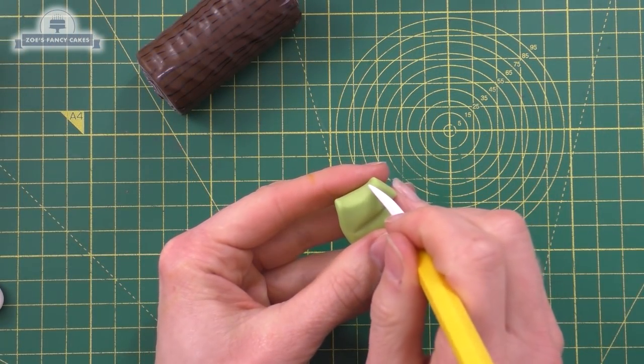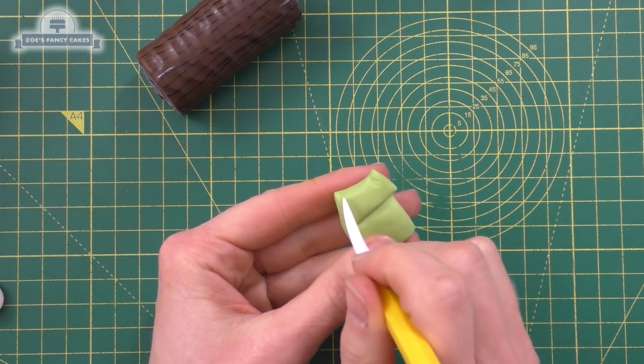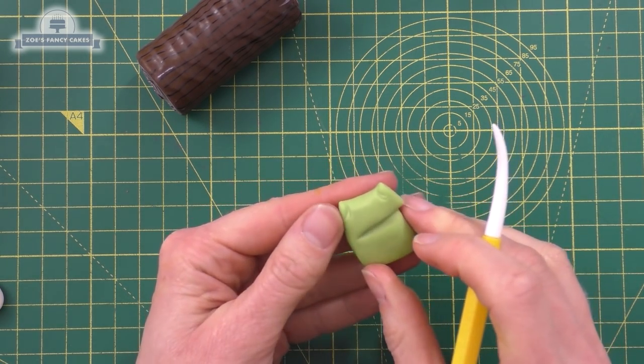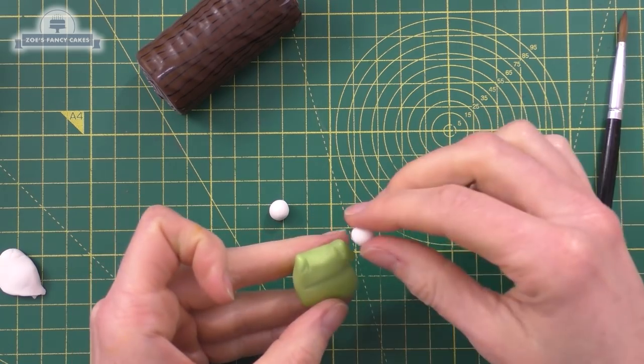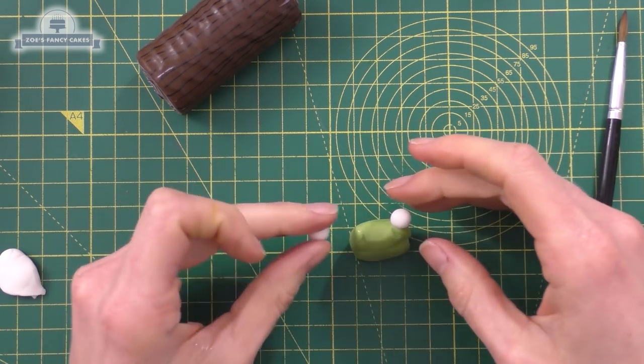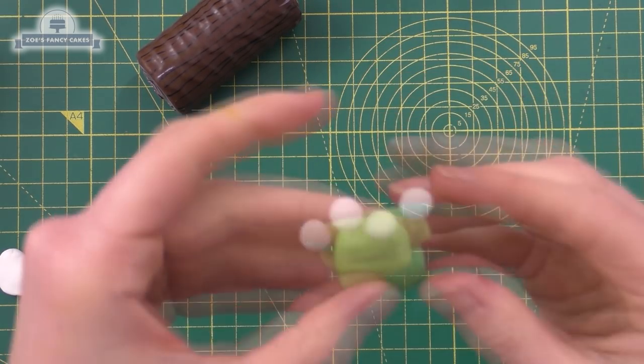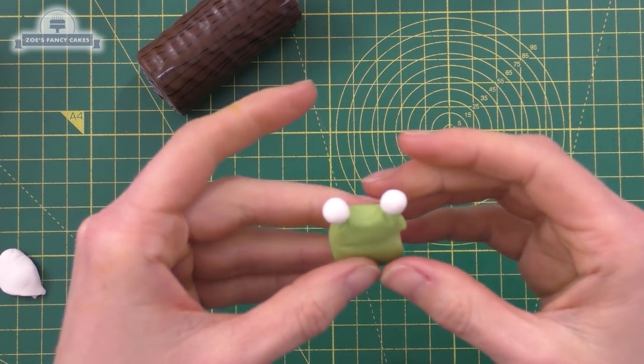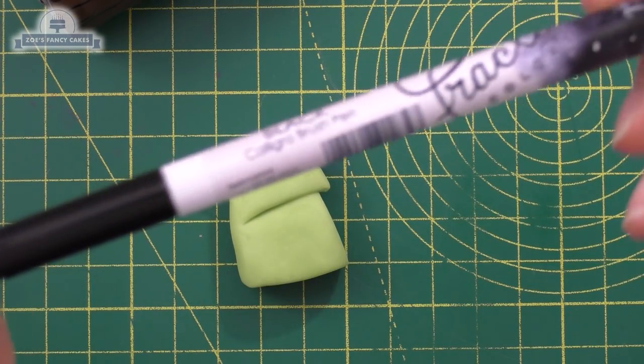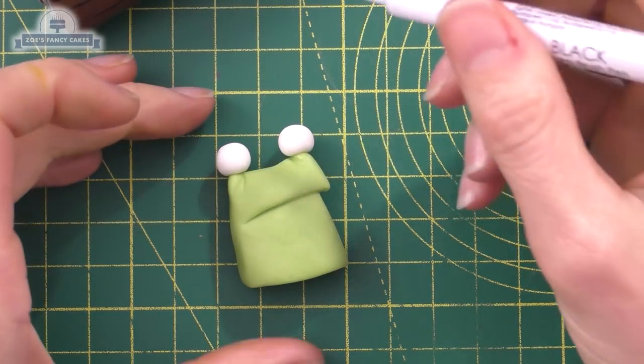We're going to put a couple of little crease lines just under each eye. I've rolled two balls of white - again, modelling paste, but you can use fondant if you prefer. Using a dab of water, we've pushed those on top of the head on either side. Now I'm going to use my edible pen - if you've got food colouring, you can paint with that instead. We're going to put a little dot in each eye.